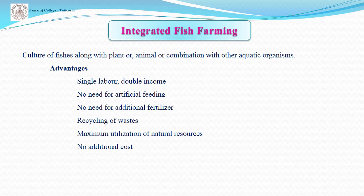Integrated fish farming is an important method defined as the culture of fishes along with agriculture, animal husbandry, or salt industry. For example, culturing fish in paddy fields or rearing cows near a fish pond are forms of integrated fish culture. Its advantages include: single labor with double income, no need for artificial feeding or additional fertilizer, recycling of waste, maximum utilization of natural resources, and no additional cost.